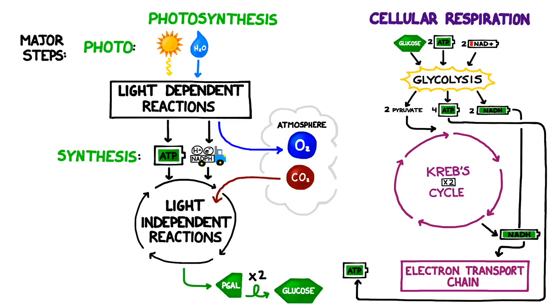The Krebs cycle produces a little bit more NADH and it also produces another electron carrier called FADH2. The Krebs cycle is kept turning by the input of carbon atoms from glycolysis and it also kicks out a couple more molecules of ATP and some carbon dioxide.